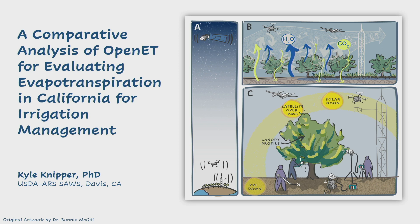Hi everyone. My name is Kyle Knipper. I'm a research scientist in Davis, California for the ARS. Today I'm going to be talking about a comparative analysis of OpenET for evaluating evapotranspiration in California for irrigation management. A lot of what I'm going to be talking about and the sites are part of a larger group effort studying tree-level research, field-level research including UAV and drones, as well as the satellite portion, which is my focus today.